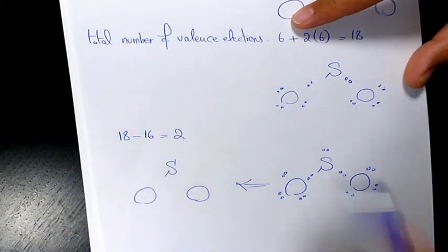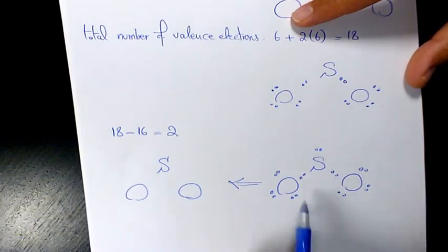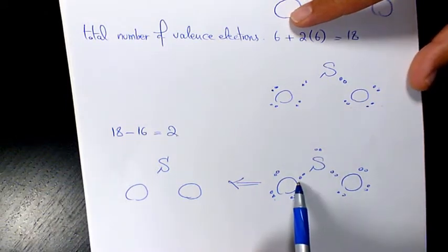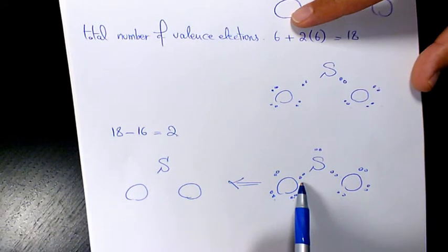When I check the octet rule, here we have oxygen with an octet, this one has an octet as well, but sulfur only has six electrons and it doesn't have an octet.